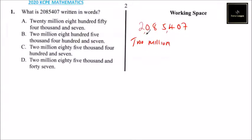We don't have 100,000, we have 85,000. So we say two million eighty-five thousand. Then we have four hundred and seven.